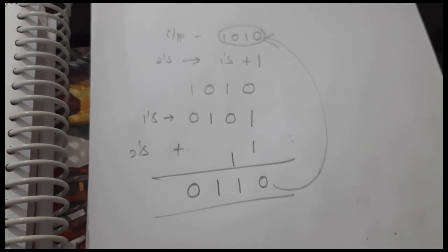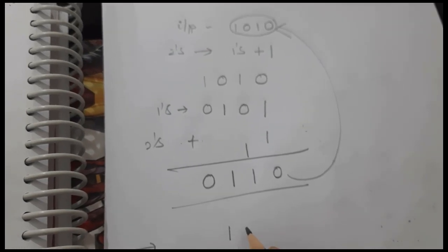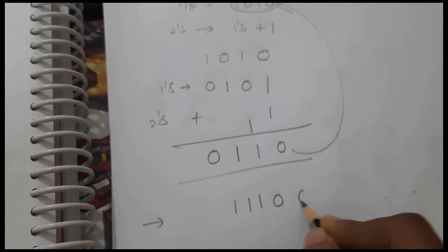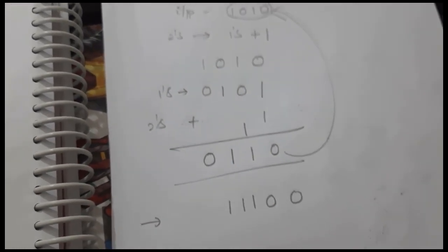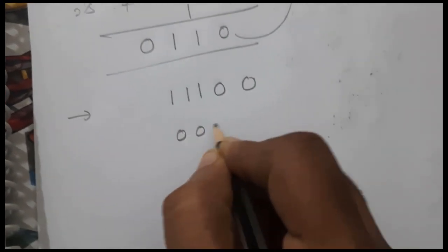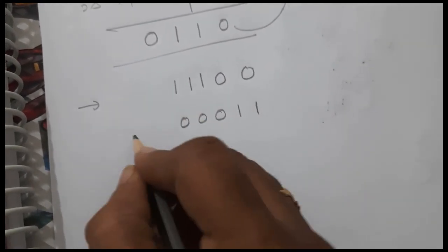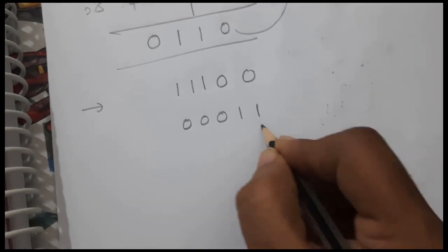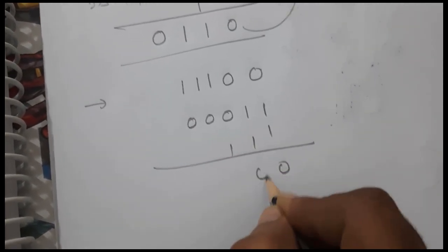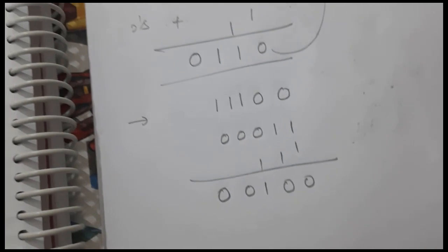Now I will take one more example with 1 1 0 0. What is its 2's complement? First I write its 1's complement, and after adding 1, the result is 0 1 0 0.